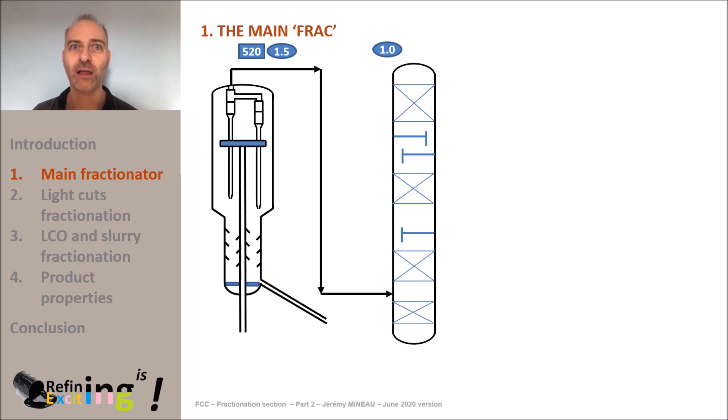In this column, the effluent in gas form enters the bottom of the column and its temperature is rapidly decreased to desuperheat the vapors and let the heaviest molecules condense. We will detail all this a little bit later in the MOOC.